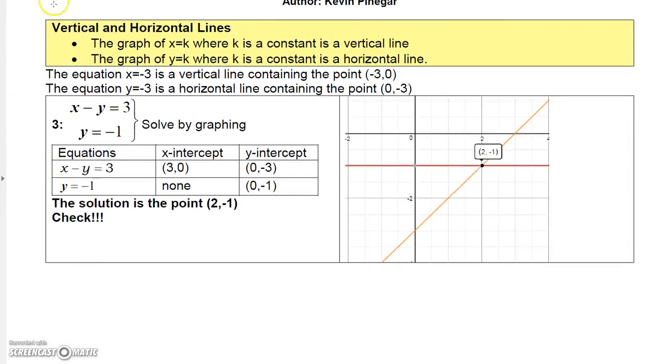Quick note about vertical and horizontal lines. If you have a line of the form x equals a constant, that graph is a vertical line. And if you have a line where the equation is y equals a constant, that is a horizontal line. So for example, x equals negative three is a vertical line that goes through the point negative three, zero. But the line y equals negative three is a horizontal line that goes through the point zero negative three.